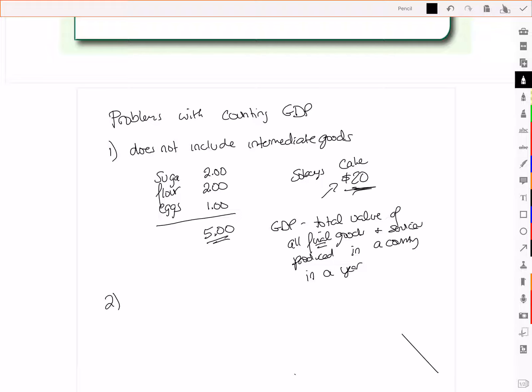The second problem with counting GDP is that GDP includes sales tax. So when we look at the value of what is being sold, C plus I plus G plus X minus IM, the problem is, is that value of what's being sold includes sales tax in it.